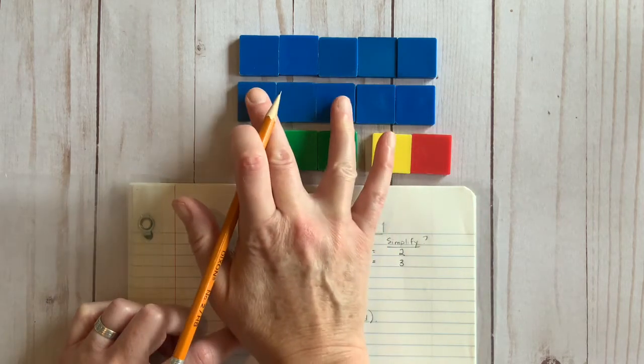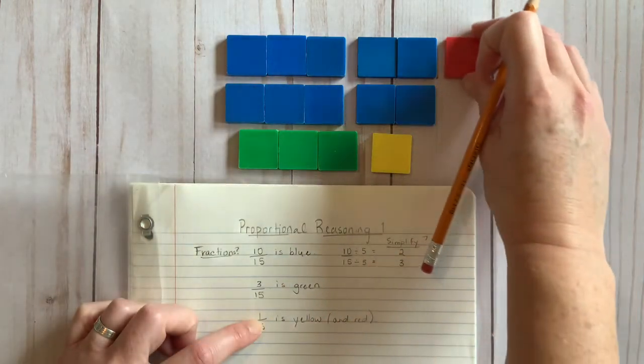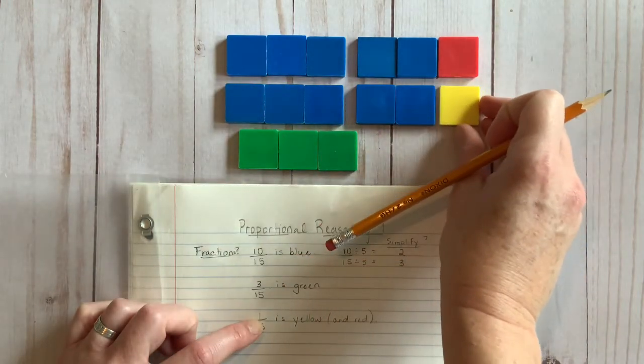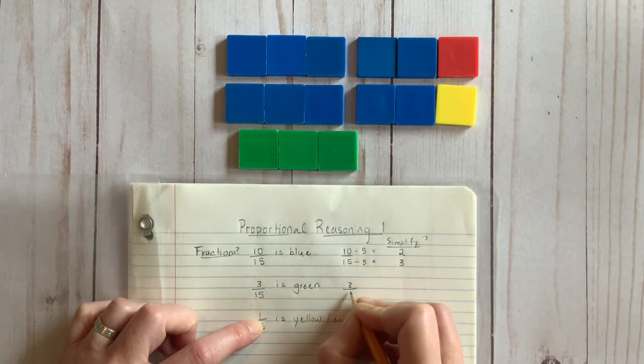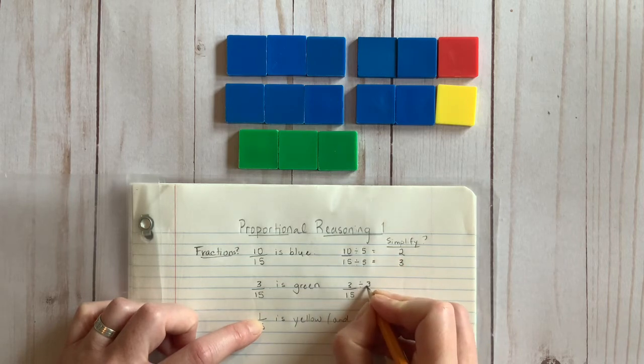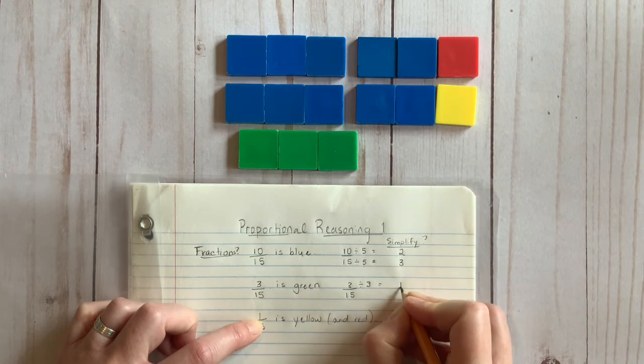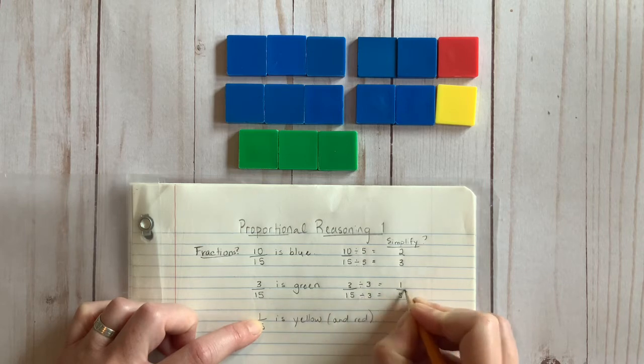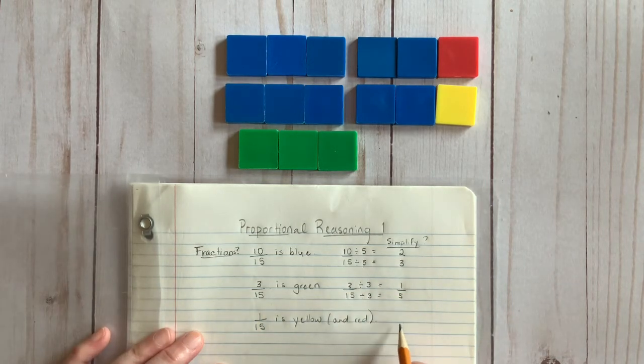Watch as I simplify the other fractions. Pause the video and discuss it when you need to. Okay. You might have been able to see that I decided to divide them up into groupings of three this time, and I ended up with one grouping that is green and five in the whole, creating a fraction of one-fifth.